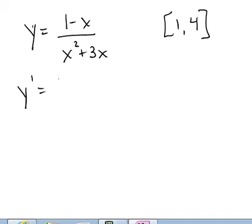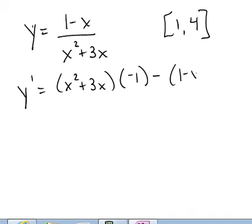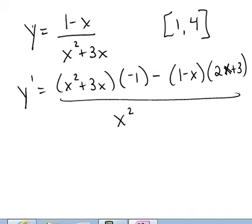Remember, it's low d high, so that's x squared plus 3x times the derivative of 1 minus x, which is negative 1, minus high d low, so that's 1 minus x. The derivative of the denominator is going to be 2x plus 3, over the denominator squared, which is x squared plus 3x quantity squared.